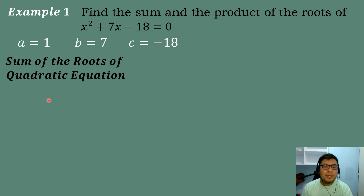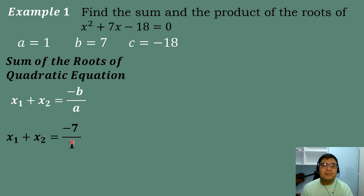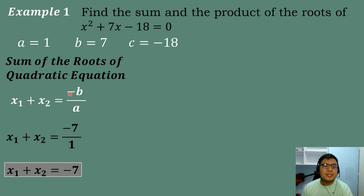Next, we will use the formula for the sum of the roots of the quadratic equation. Our formula is negative B all over A. So, we substitute the corresponding values. The value of B is equal to 7, so this will be negative 7. The value of A is equal to 1. Dividing, negative 7 divided by 1 is equal to negative 7. Therefore, the sum of the roots of the quadratic equation is equal to negative 7.